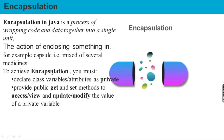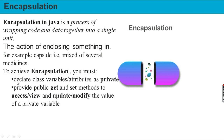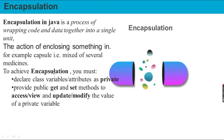How to achieve encapsulation in Java? We have to declare variables or attributes as private. We also have to use getter and setter methods. Getter and setter methods are declared as public.